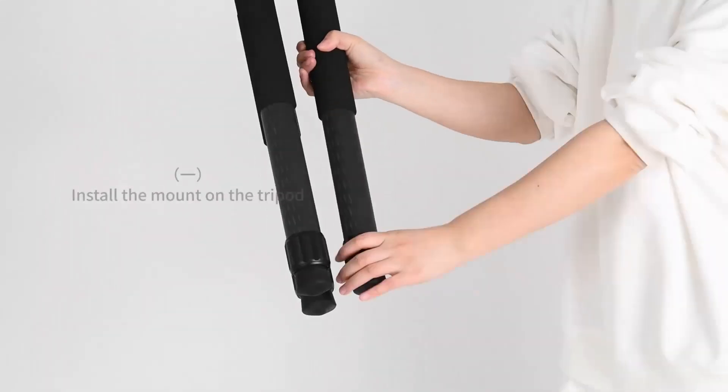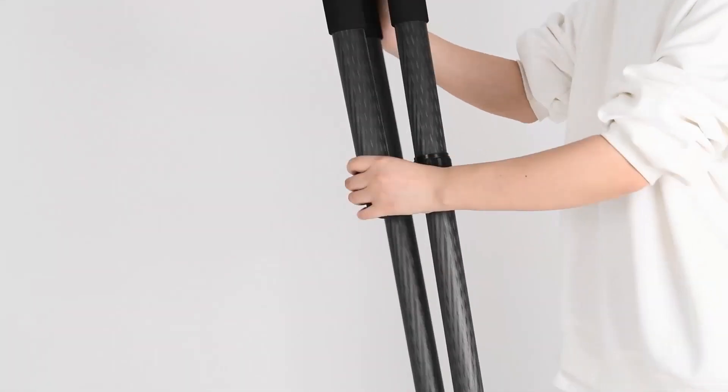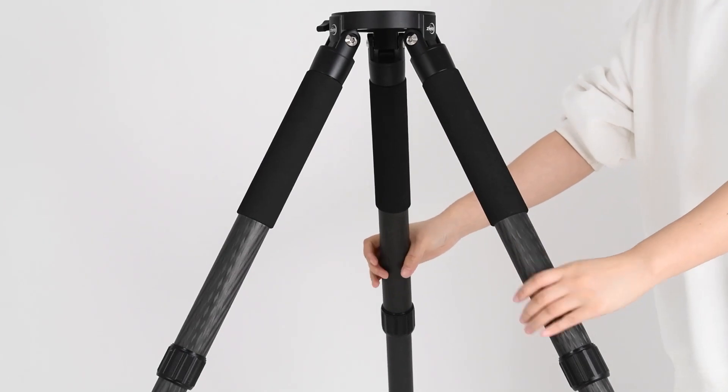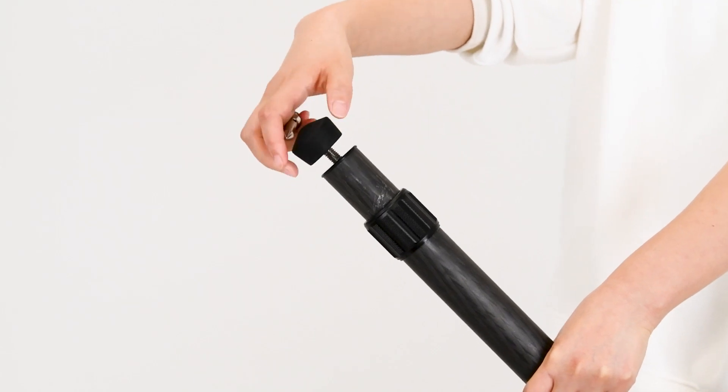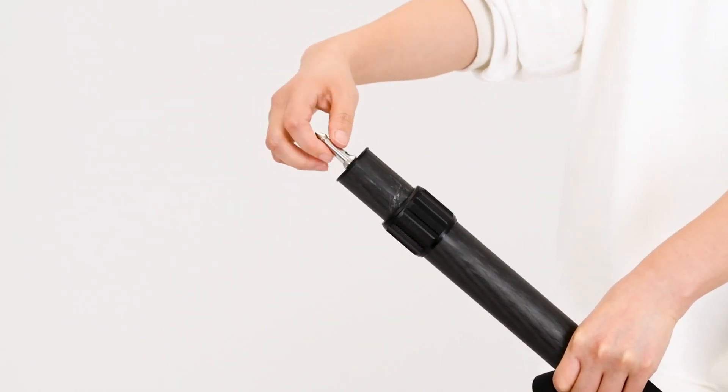Mount installation. Adjust the legs until the desired height is reached. Lock the tripod legs and attach the weighted bag. When in muddy, slippery, or otherwise inclement conditions, replace the feet of each tripod leg with the included stability pegs.